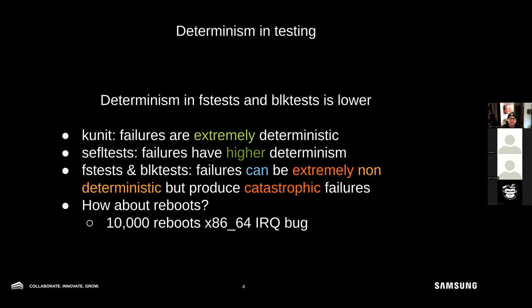Determinism is important to review because otherwise we don't get an appreciation for the difficulty of testing. For Linux kernel development there are tons of different testing tools. kunit is extremely deterministic — you run the tests and they're all supposed to pass unless the test already knows it should fail. Selftests tend to have higher determinism and should all pass. However, fstests and block tests can obviously fail randomly, and any failure can be pretty catastrophic. An example: an odd x86 RQ bug was only reproducible after 10,000 reboots in a row.